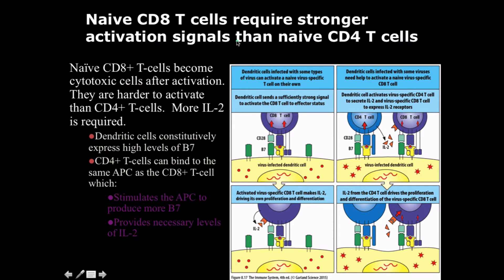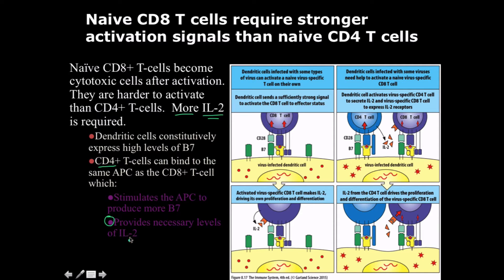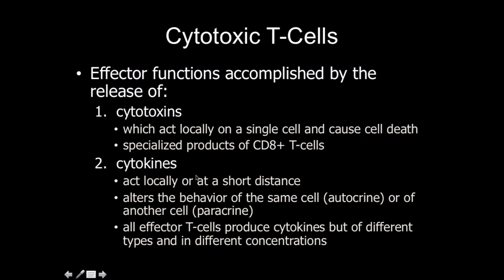Naive CD8 T cells require stronger activation signals than naive CD4 T cells. This is important given the identity and action of CD8 positive T cells. Mainly, larger amounts of interleukin-2 are required. Sometimes that excessive amount of interleukin-2 is sufficient when it comes from the CD8 T cell itself, but most of the time we need a CD4 helper T cell to provide the necessary levels of interleukin-2 to result in activation of our CD8 T cells.